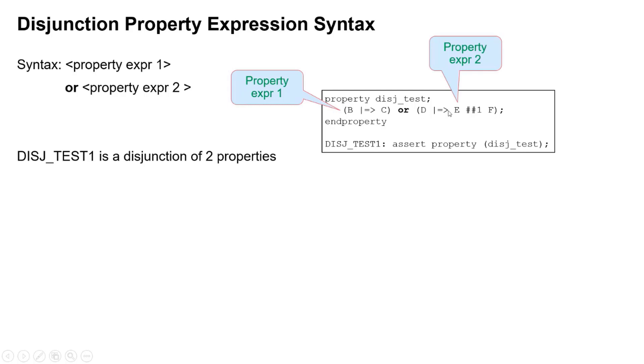Each property expression in this case is a different length which is perfectly fine but they could be the same length. This property here that we've asserted would succeed where either or both of those properties hold, so it's not mutually exclusive one or the other—that's why we call it an OR.